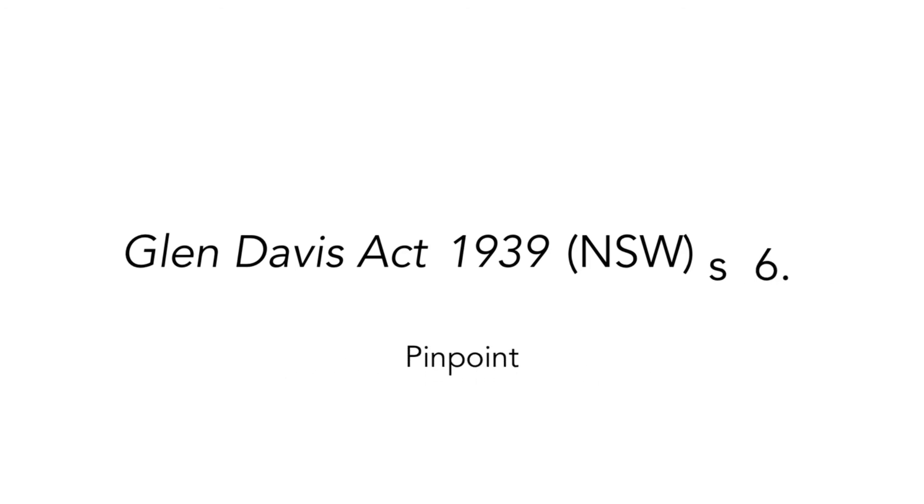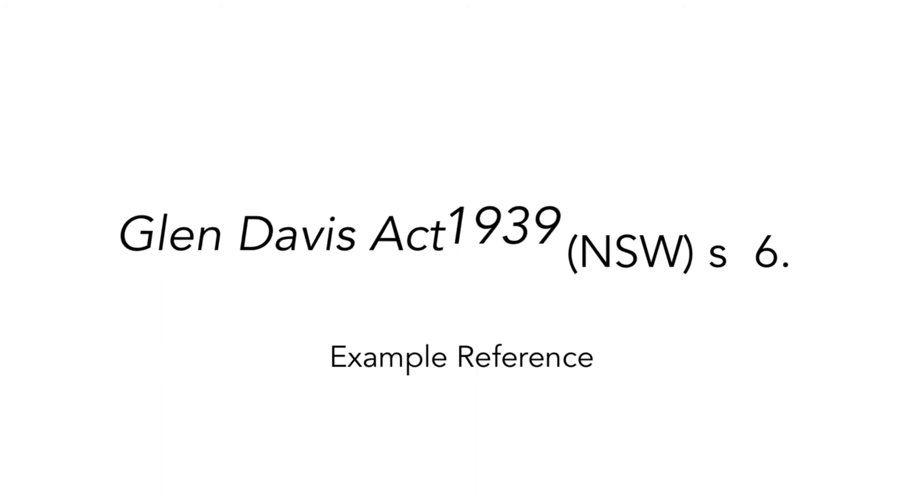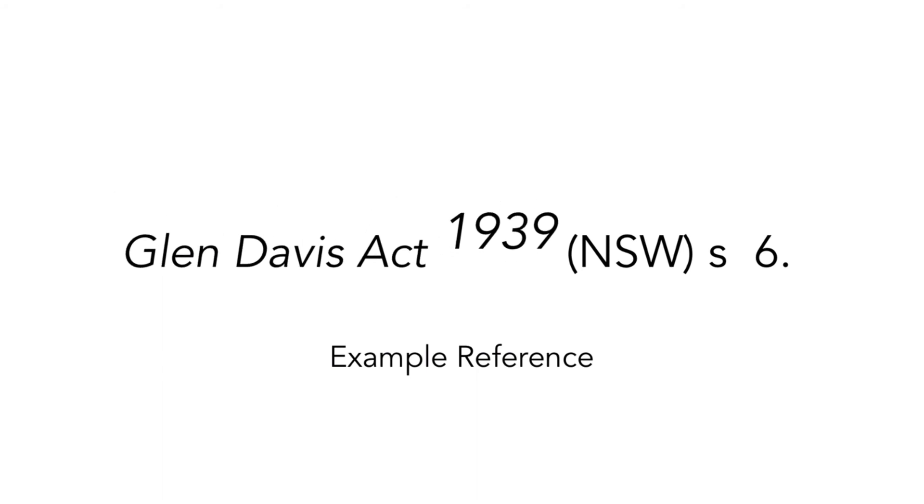Then leave a space and write the number of the section. So the complete reference to an Act would be: title in italics, year in italics, jurisdiction within brackets, and pinpoint. Remember that references in footnotes always end in a full stop, while references in your bibliography never do.